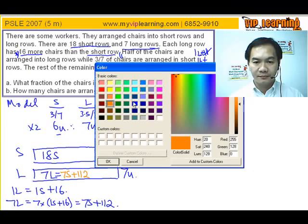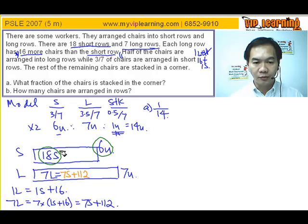Now what about this situation here? 6 units equal 18 short rows. And then we have the 7 units here. So we can make the connection between these two to find how many short rows over here. Let's see.